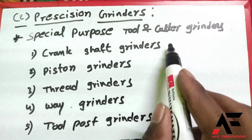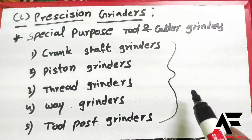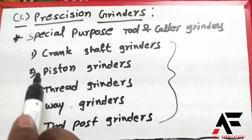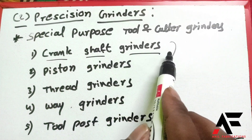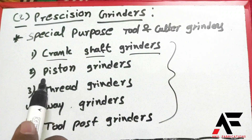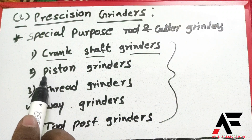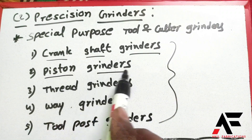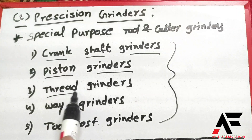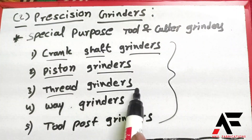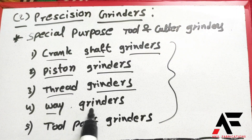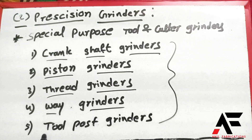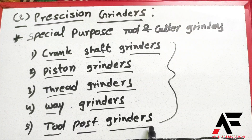Special purpose grinders include 5 types: Crankshaft grinders, Piston grinders, Thread grinders, Way grinders, and Tool post grinders.